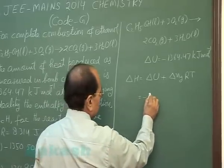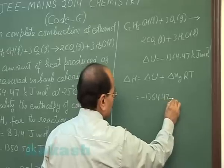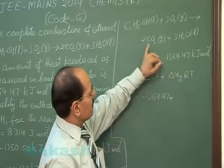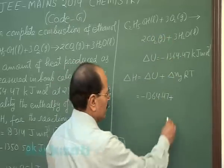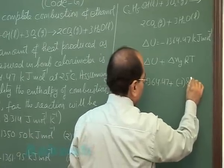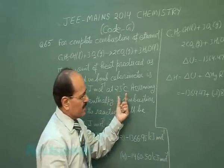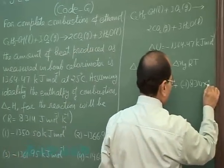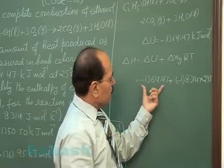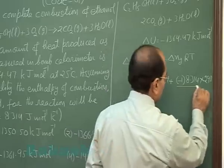Delta U is given as minus 1364.47, plus delta-Ng times R times T. For this reaction, delta-Ng is 2 minus 3, that is minus 1. The value of R is 8.314 joule per mole per kelvin. The temperature given is 25 degrees Celsius, that is 298 kelvin. Since delta U is given in kilojoule and R is in joule, we convert R to kilojoule by dividing by 1000.